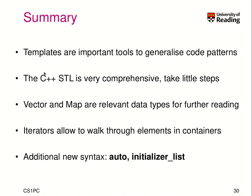To wrap up today's lecture: templates are very important tools to generalize code patterns, and the C++ standard template library is very comprehensive — like 1,000 pages. I recommend taking small steps: experiment with a single container type like Vector and Maps, which are really relevant data types. The iterator concept is also very powerful. In terms of new syntax, we looked at the auto type which infers the data type at compile time, and initializer lists allowing you to pass arbitrary data as arguments — particularly when creating a new object. Have a great week!